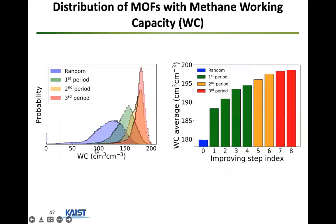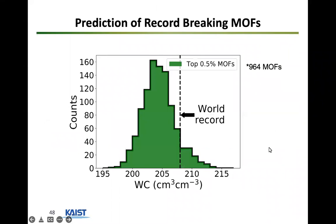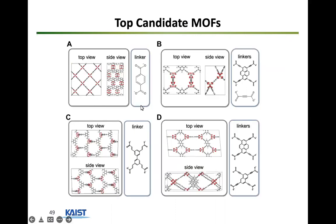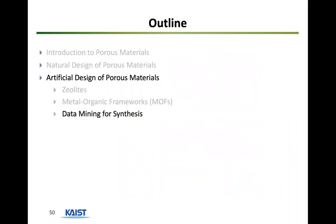As the genetic algorithm progresses, the working capacity distribution shifts to the right, indicating better and better materials. Looking at the top 0.1% within each period, performance increases steadily. Once converged, we compared against the world record — and we managed to create just under 1,000 MOFs that surpassed the world record for methane working capacity using this fused machine learning and genetic algorithm model. We're now trying to work with experimentalists to synthesize some of these top candidate materials.